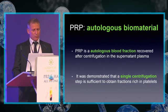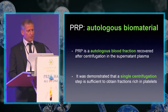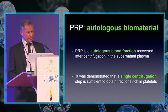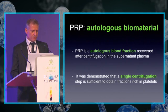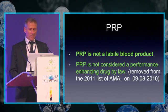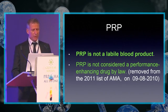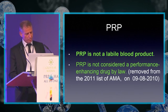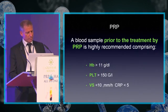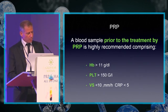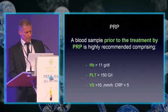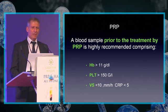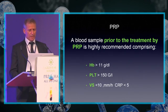PRP is an autologous blood fraction recovered after centrifugation in the supernatant plasma. It has been demonstrated that a single centrifugation step is sufficient to obtain a fraction rich in platelets. PRP is not a labelled blood product, but is now considered a performance-enhancing blood product by law. A blood sample prior to PRP treatment is highly recommended, comprising: Hb greater than 11, PLT greater than 150,000, VS less than 10, and CRP less than 5.